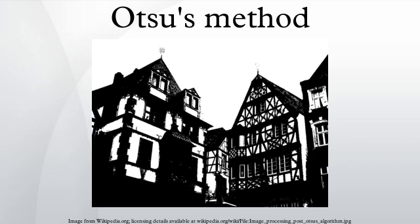A JavaScript implementation is provided. The input argument 'total' is the number of pixels in the given image. The input argument 'histogram' is a 256-element histogram of a grayscale image with different gray levels. This function outputs the threshold for the image.